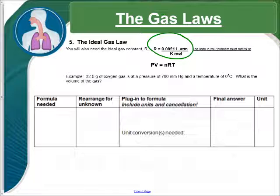Pressure of 760 millimeters of mercury, that's my pressure, that's P. Temperature of 0 degrees Celsius, that's going to be T. And what is the volume of the gas? So, we are looking for volume in this problem.